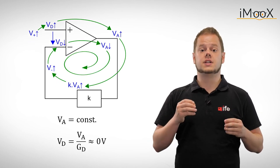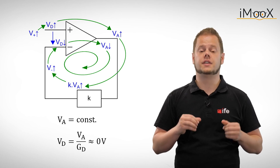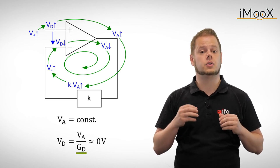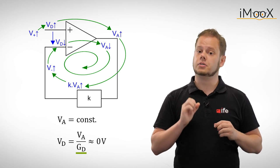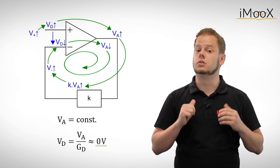Since the output voltage is limited by the supply voltage and the differential gain is very high according to the previously mentioned rule 1, the differential input voltage almost equals zero volts.